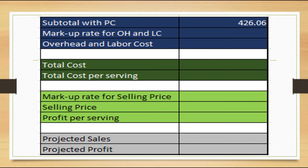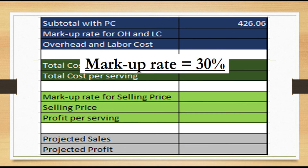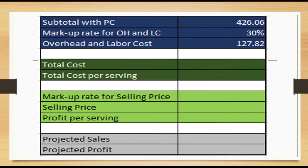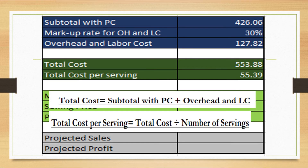Now that we know the food cost and packaging cost, which is 426, we need to know the overhead and labor costs. For this, we're going to use a markup rate of 30% to compensate for overhead and labor costs. Disclaimer: this is a general markup rate for small and food businesses. So we get 30% of 426 = 127.82. Total cost is subtotal with packaging cost plus overhead and labor costs = 553.88.